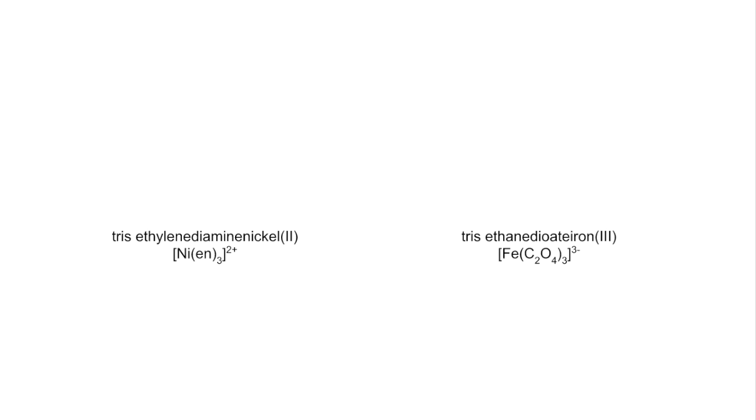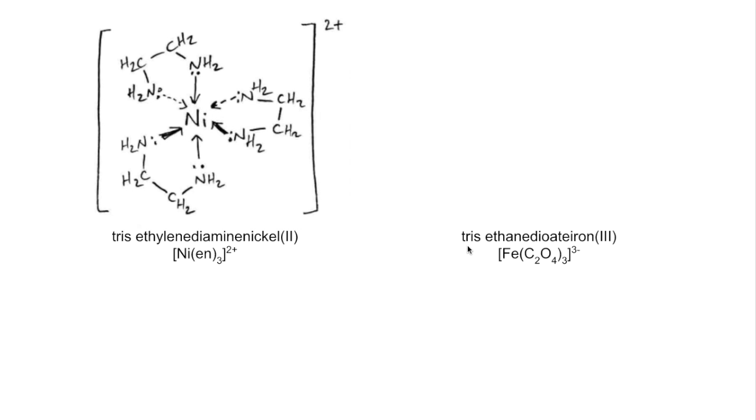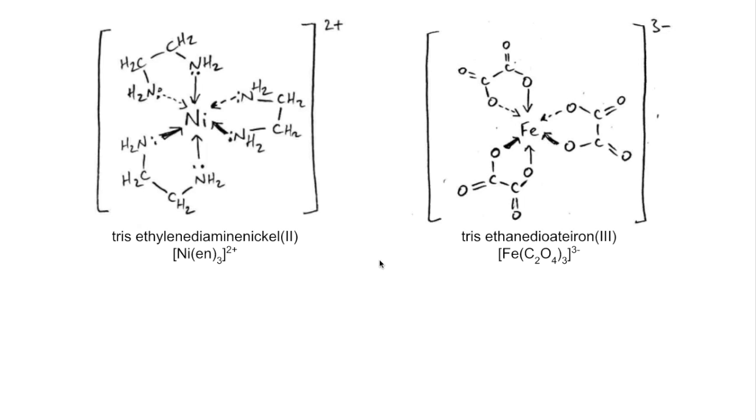Moving on to complexes with bidentate ligands now. We've got the name and the formula here. We've got three ethylenediamines and nickel 2 in the middle, so that would look like that. And the next one: three ethanedioates, iron 3 in the middle, and that would look like that. I'll just quickly explain the charge on these. Ethylenediamine has no charge, so the nickel, nickel 2, so +2 oxidation state, +2 charge. The iron, you can see there's the Roman 3, so iron 3. Each of these ligands has a 2- charge, so we've got 6- from the 3 ligands, 3+ from the iron, so we're left with a 3- charge.